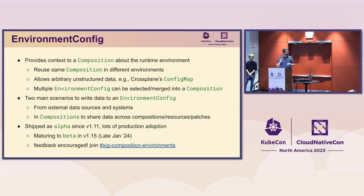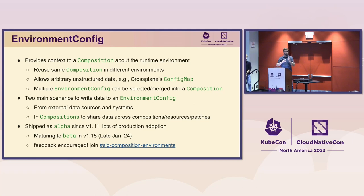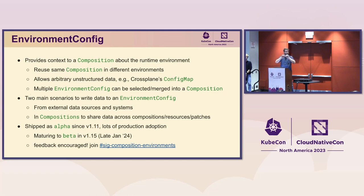There are two big scenarios to consider as sources of data going into an environment config. First, things outside of Crossplane entirely — external data sources like your CI/CD system or GitOps tooling. Your CD system could deploy an environment config with information about a particular dev or prod environment. Second — a specific example from the ConsenSys platform — within compositions themselves: a composition can write status and data about resources to an environment config, and later a totally different composition can read that information. It's a way to share data across compositions.